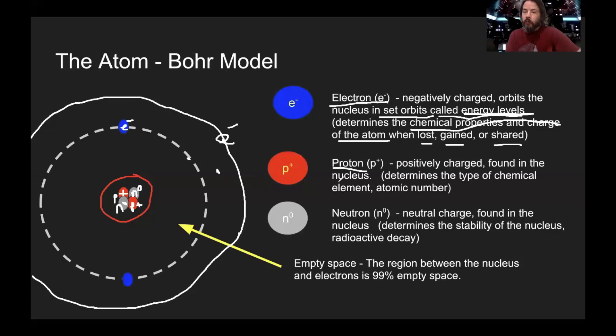Protons. Positive charge found in the nucleus. Determines the type of chemical element, which is also known as the atomic number. So the protons actually tell us that this is hydrogen. If it's hydrogen, it has one proton. If it has six protons, then you have carbon and not hydrogen. So the protons tell us what element it is. And carbon and hydrogen have very different properties, and that's because of this.